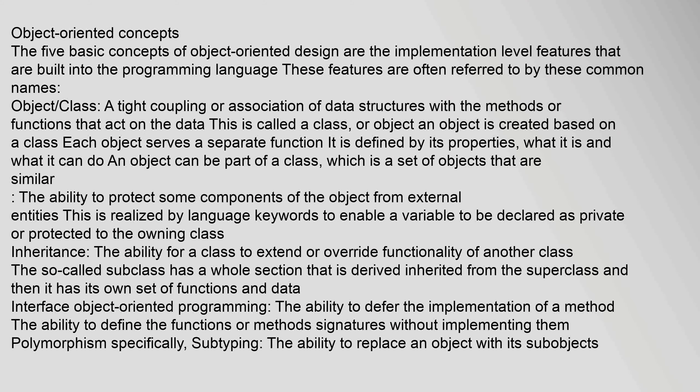The five basic concepts of object-oriented design are the implementation-level features built into the programming language. Object-class: a tight coupling or association of data structures with the methods or functions that act on the data. This is called a class or object. An object is created based on a class. Each object serves a separate function, defined by its properties — what it is and what it can do.